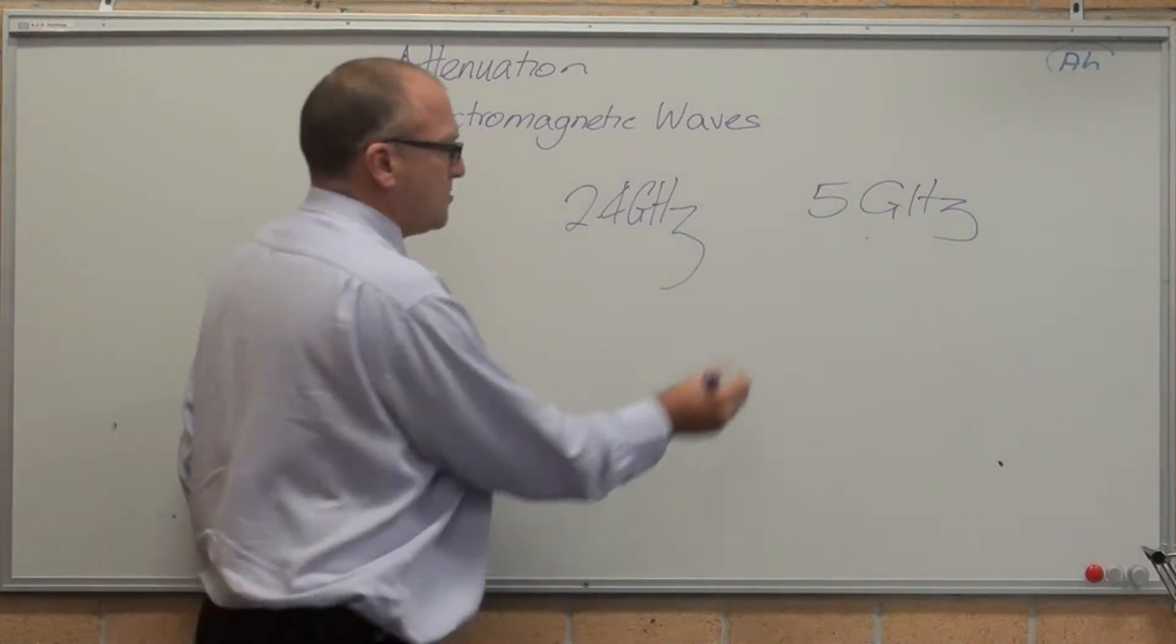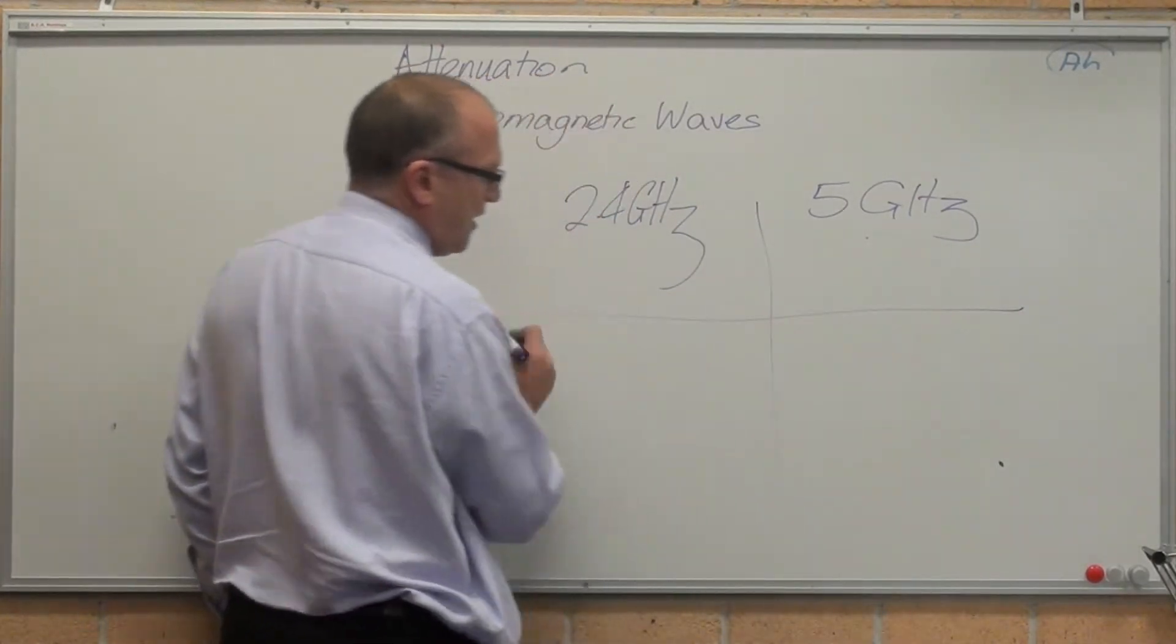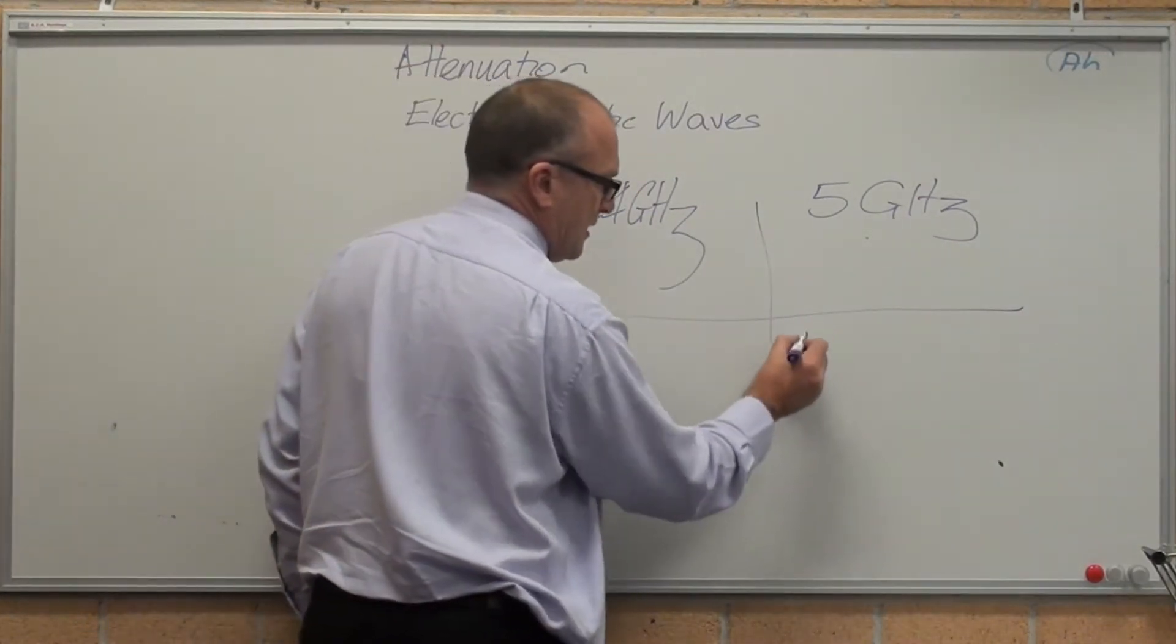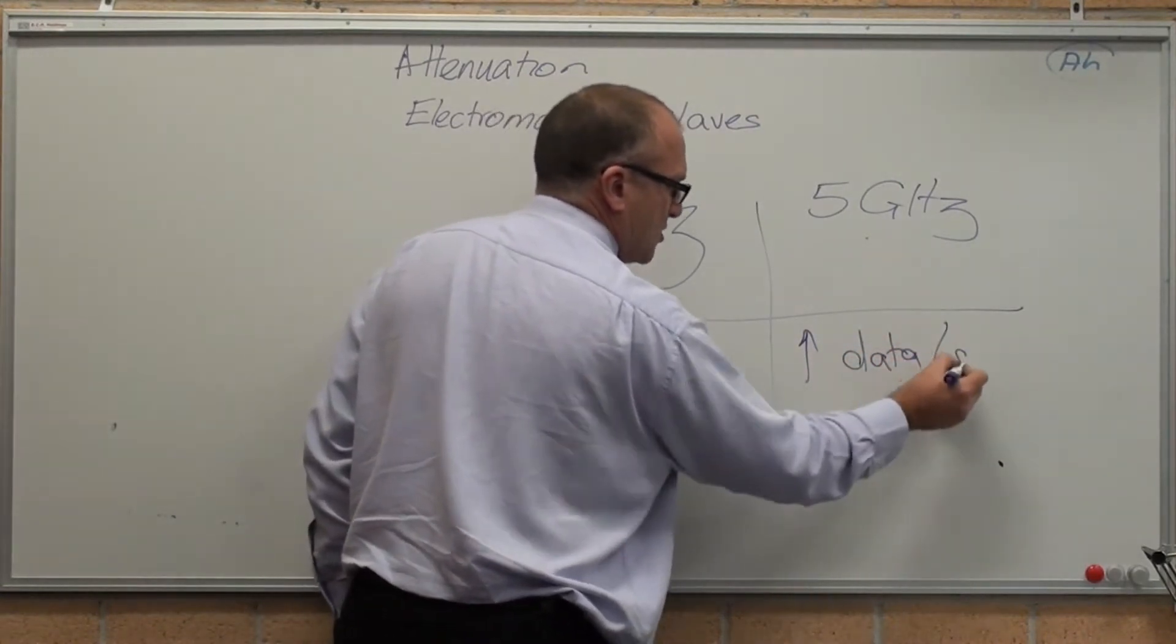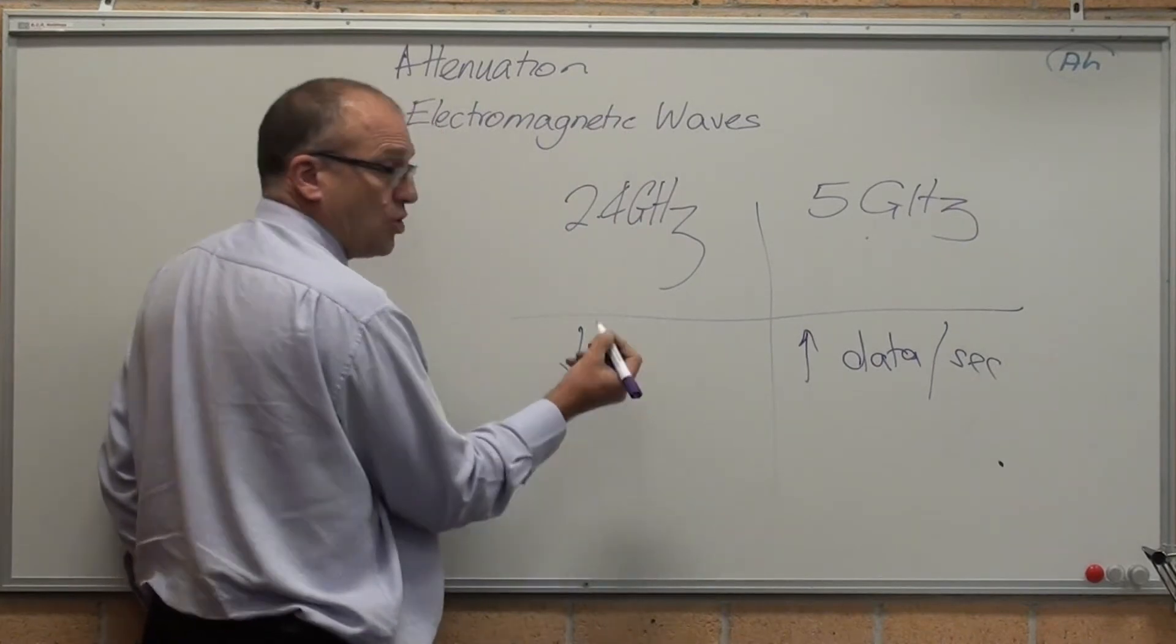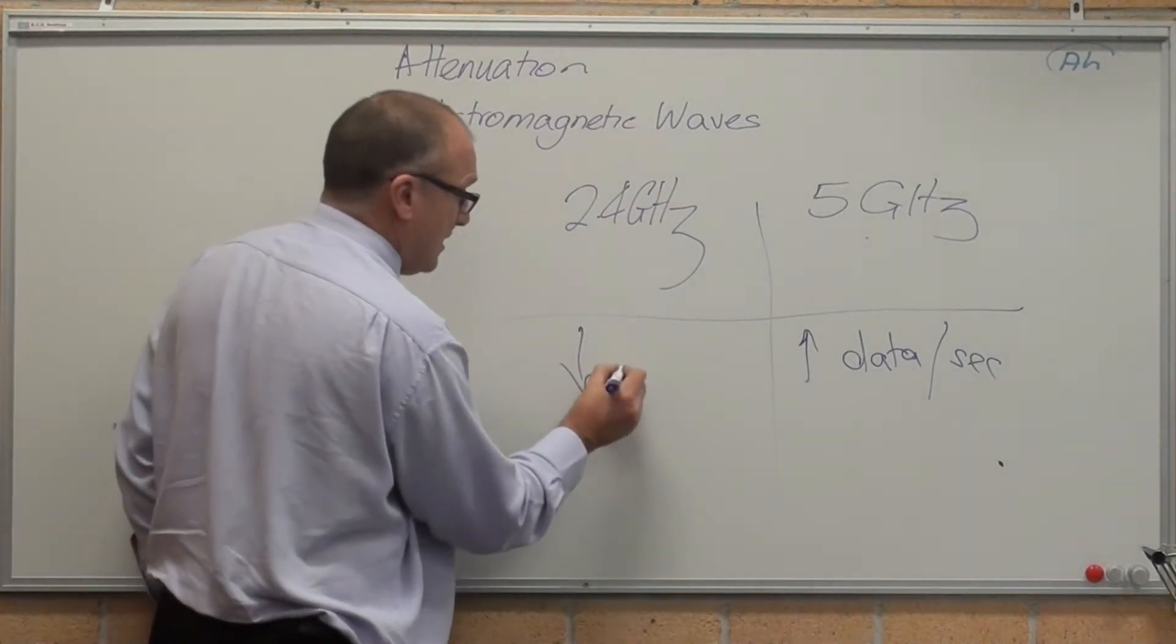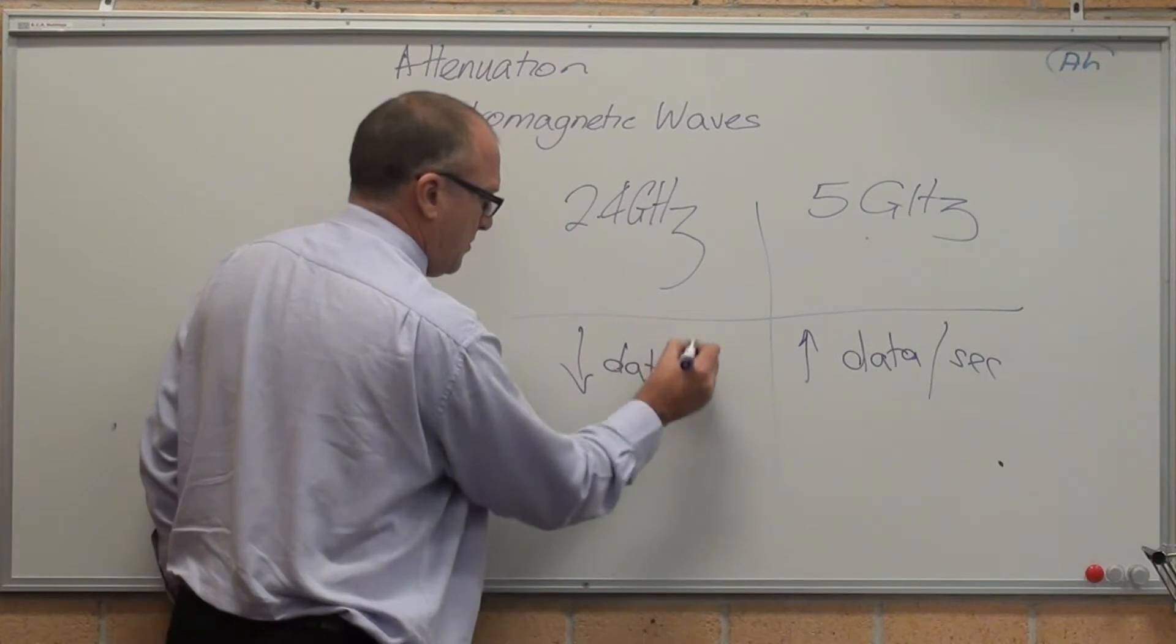5 GHz, because it travels at a higher frequency, can carry more data, data per second. Now, 2.4 GHz carries less data per second.